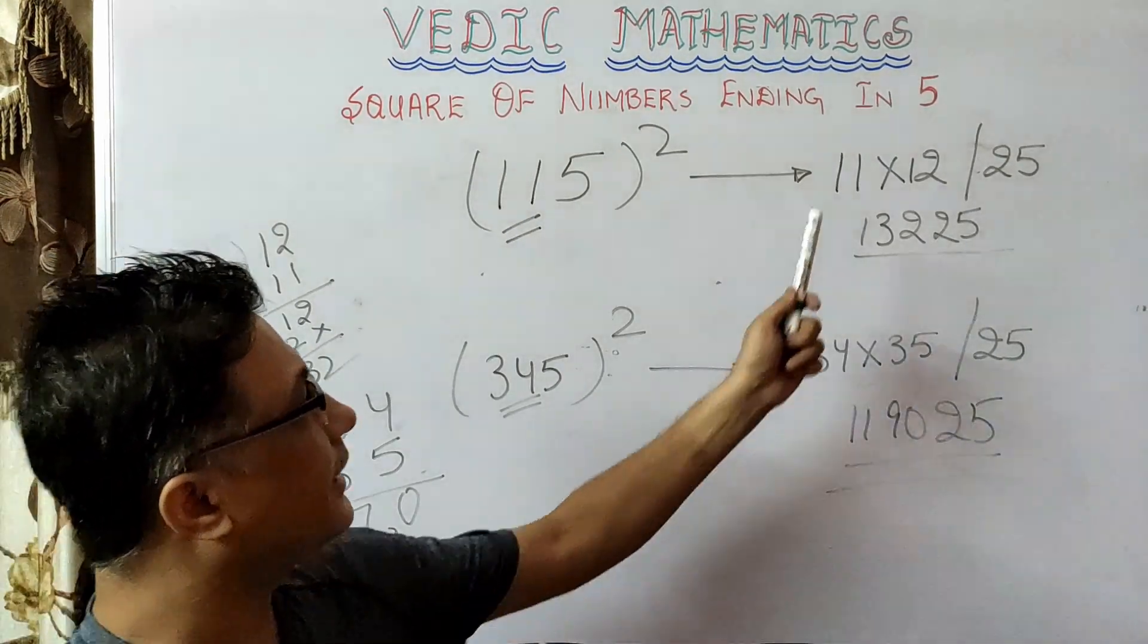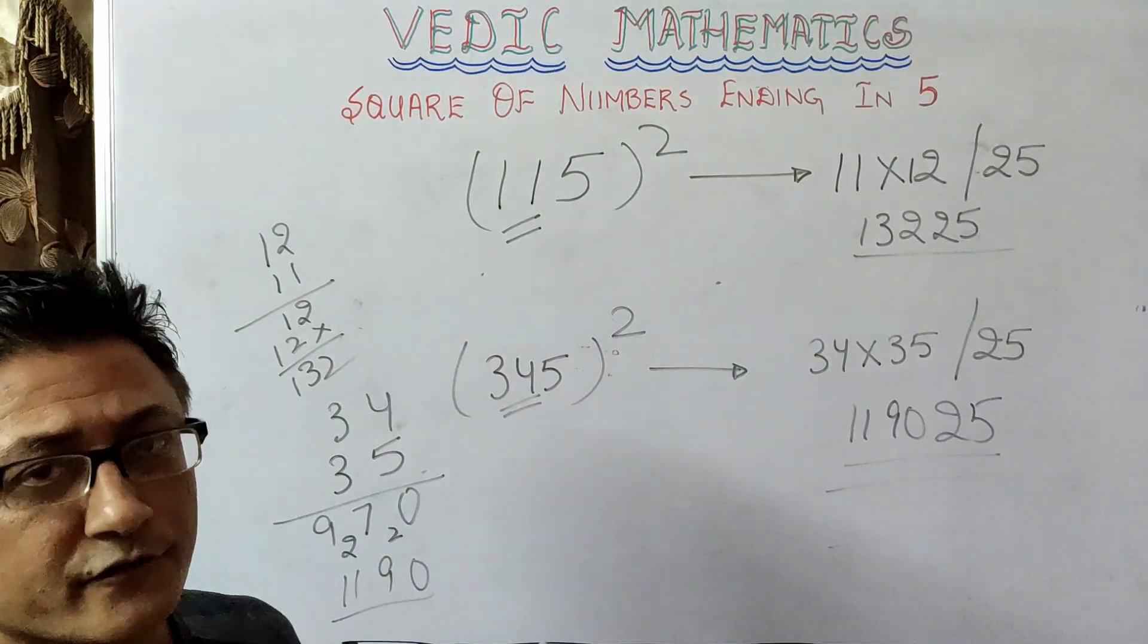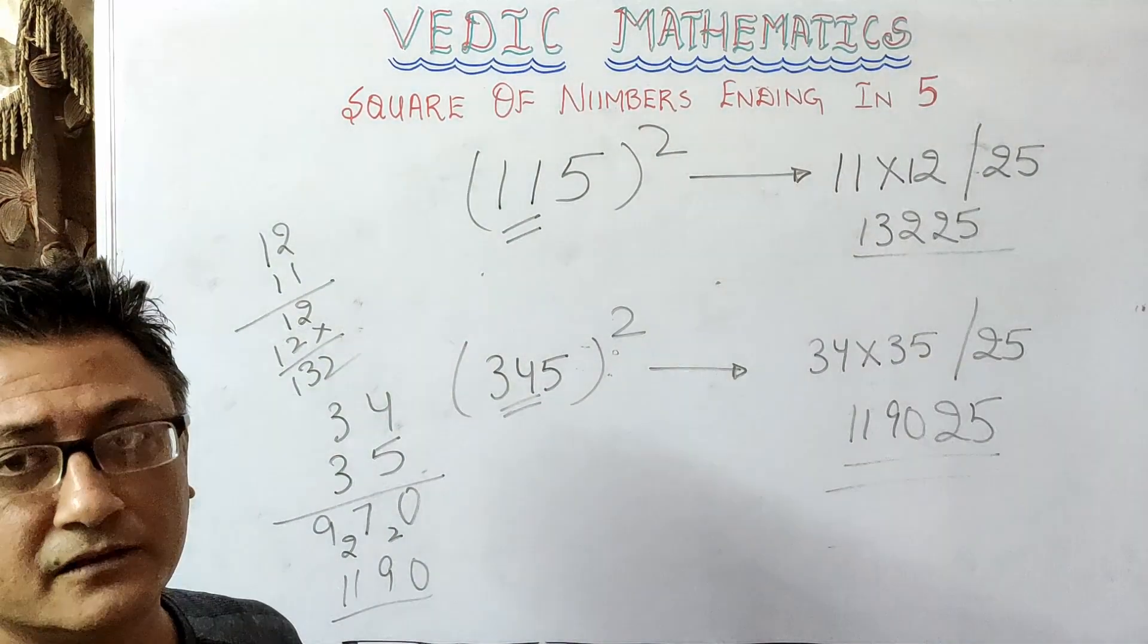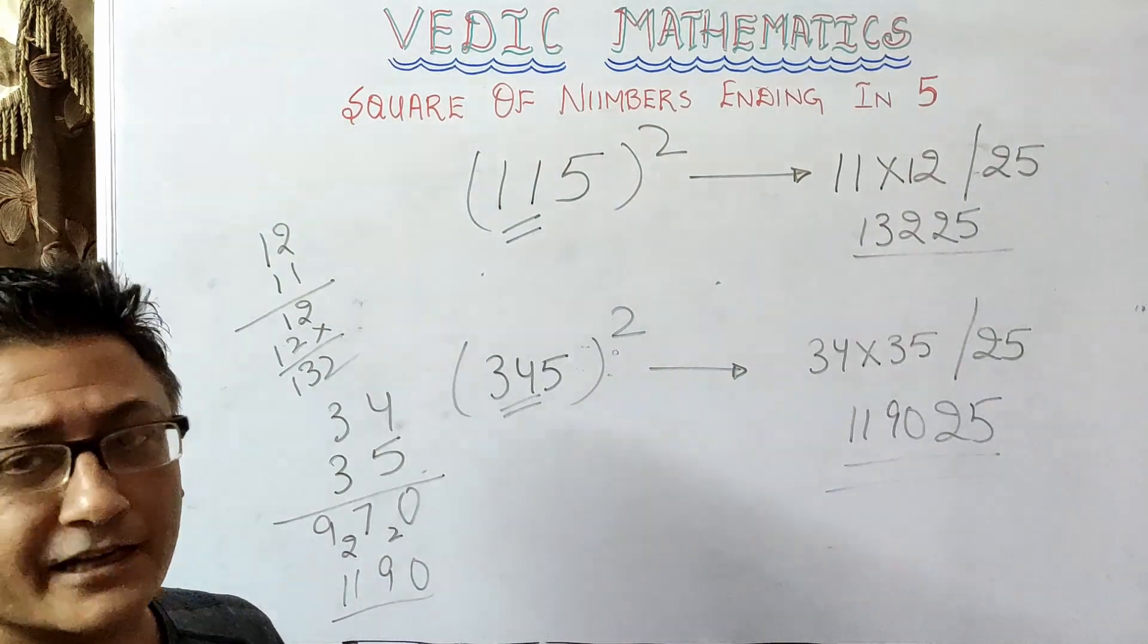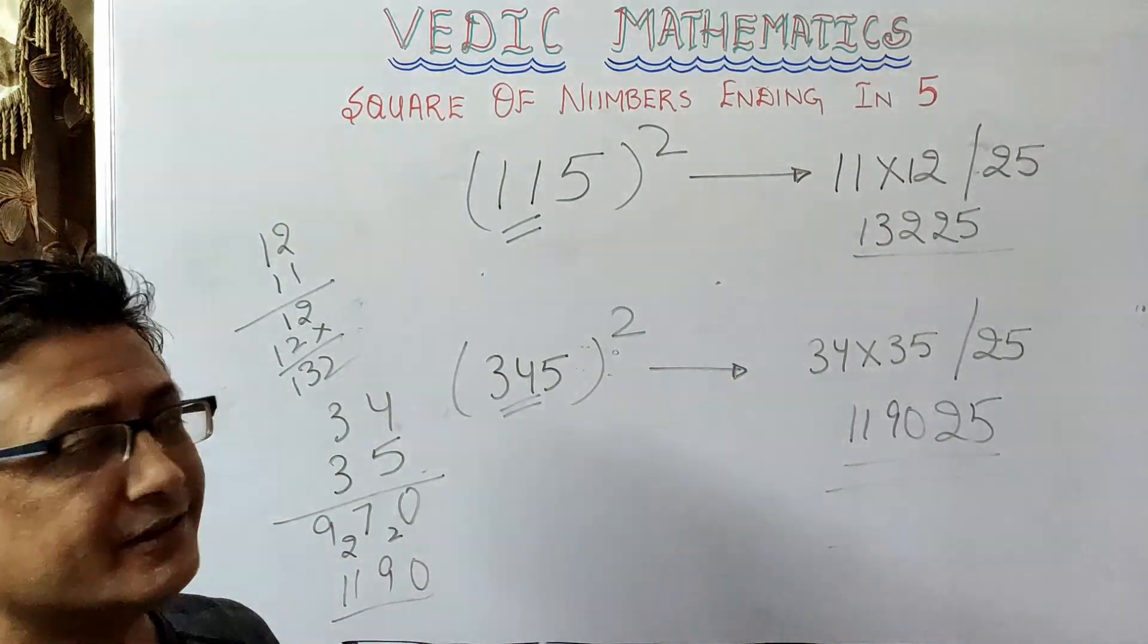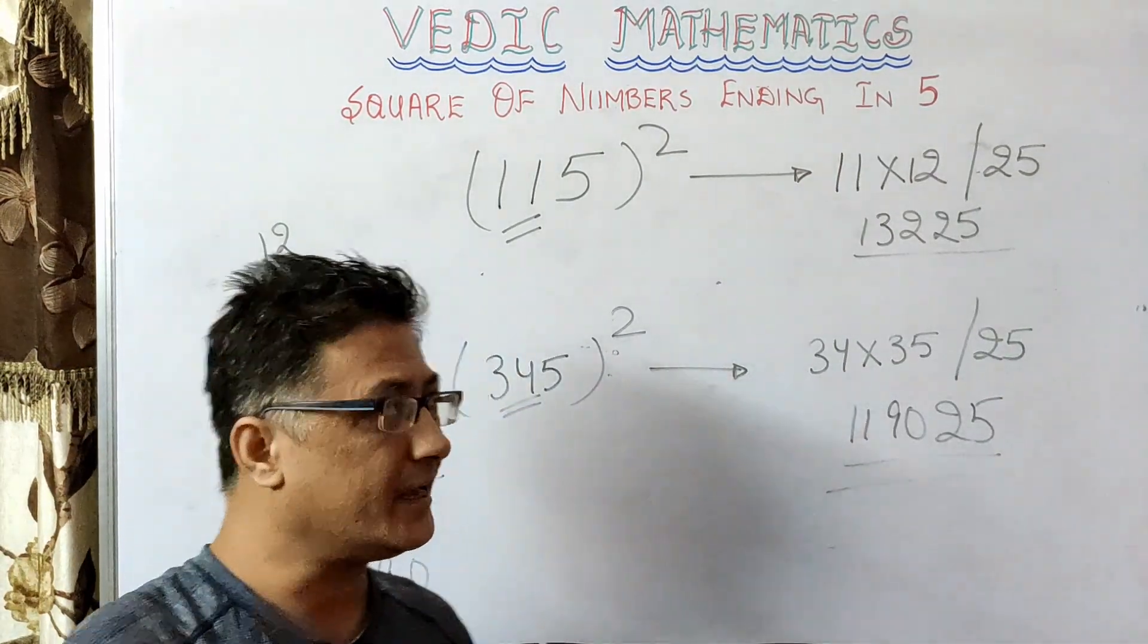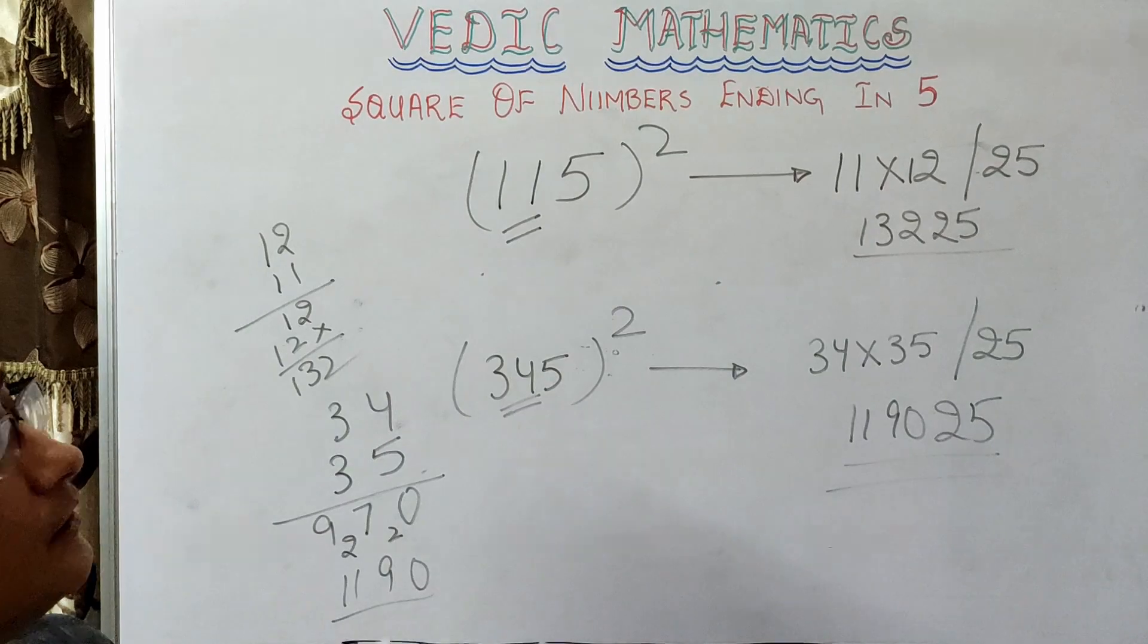squares of numbers that don't end in 5? For example, you have to find the square of 19, the square of 37, the square of 246, the square of 3427. Vedic mathematics has another method to